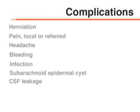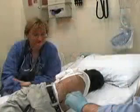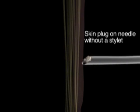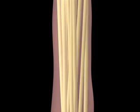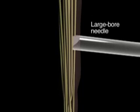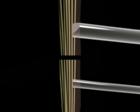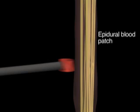Lumbar puncture has numerous possible complications, including cerebellar herniation, referred pain, headache, bleeding, infection, the formation of a subarachnoid epidermal cyst, and leakage of spinal fluid. Many of these complications can be avoided by conducting a careful assessment of the patient before the procedure, including a thorough neurologic examination, retinoscopy, and monitoring throughout. A subarachnoid epidermal cyst occurs when a skin plug is introduced into the subarachnoid space; standard use of a needle with a stylet will avoid this. Leakage of spinal fluid is more likely with a large-bore needle, so a smaller-bore needle should be used whenever possible. In the case of persistent leakage, an anesthesiologist should be consulted to determine whether a blood patch is needed to occlude the leak.